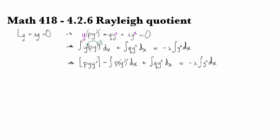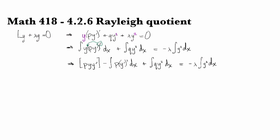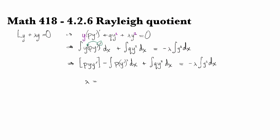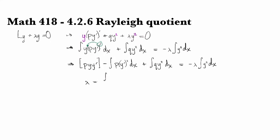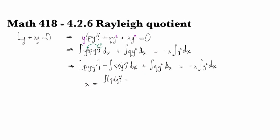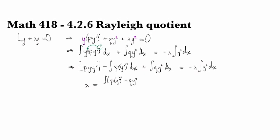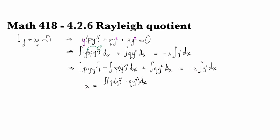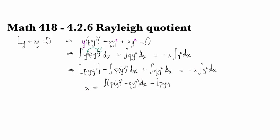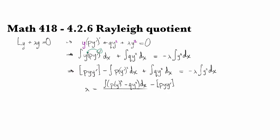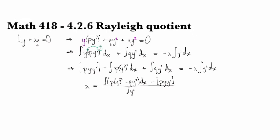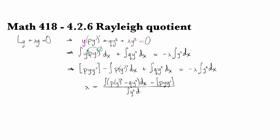Now let's solve this for lambda. So multiplying by a negative and shuffling some junk around. What do we get? We have the integral of py prime squared minus qy squared dx. And we've got that integral boundary term shuffled to the other side, pyy prime.